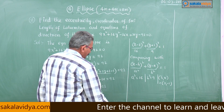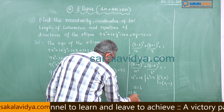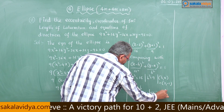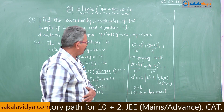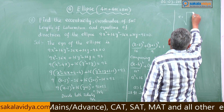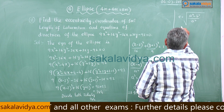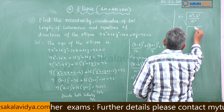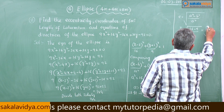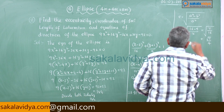Since a² = 16 > b² = 9, that implies it is a horizontal ellipse. Now we can find eccentricity: e = √(a² - b²)/a² = √(16 - 9)/16 = √(7/16) = √7/4. This is the eccentricity value.